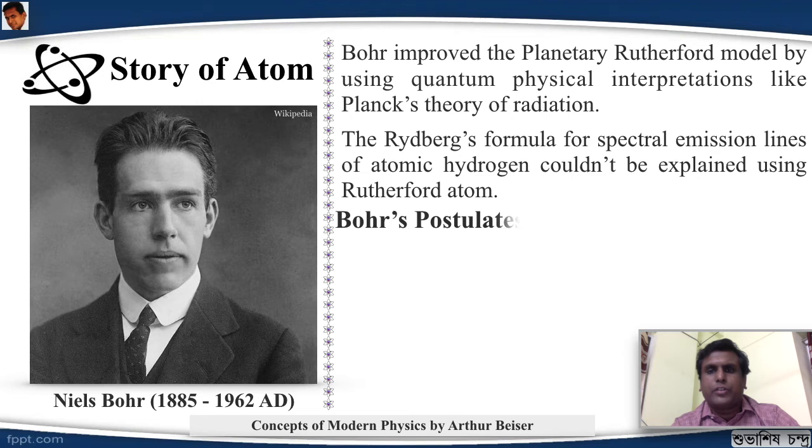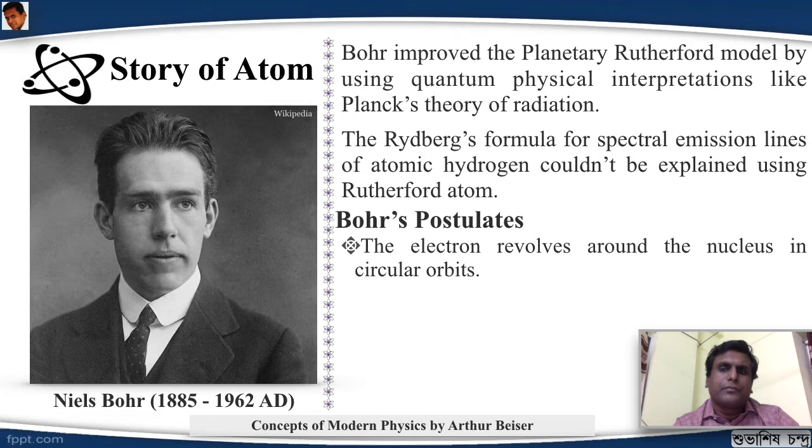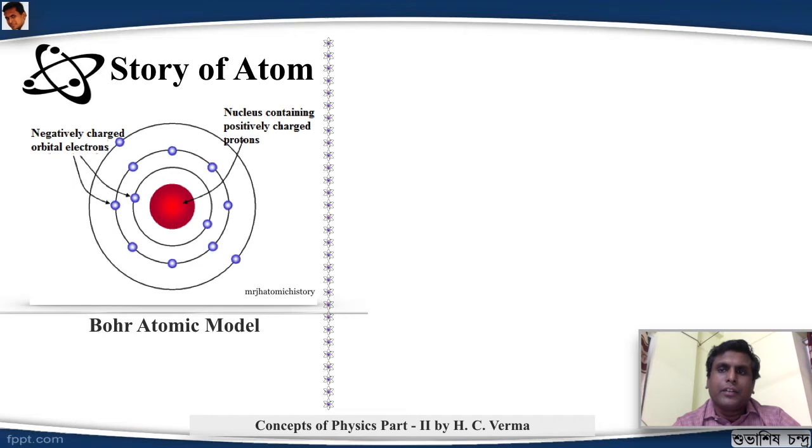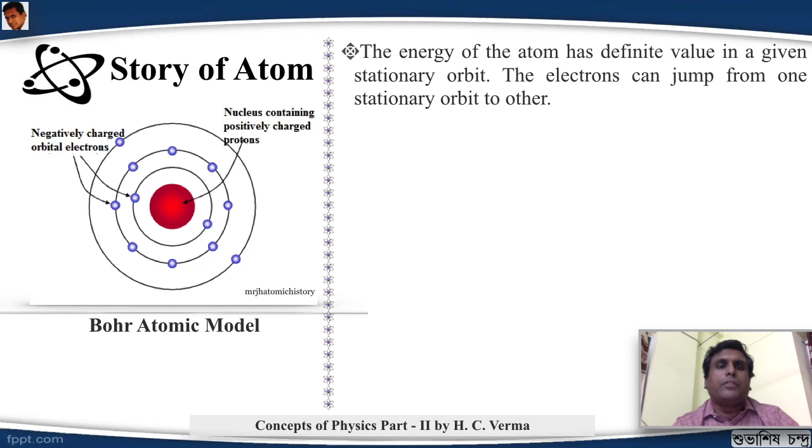So Bohr gave four postulates. His first postulate was: the electron revolves around the nucleus in circular orbits. The orbit of the electron can take on the spatial value of the radii. In these orbits, the electron does not radiate - these orbits are called stationary orbits. So the electron, if it stays in that orbit, will not radiate. That is the Bohr atomic model. Next, the third postulate was: the energy of the atom has definite value in a given stationary orbit. The electrons are allowed to jump from one stationary orbit to another.